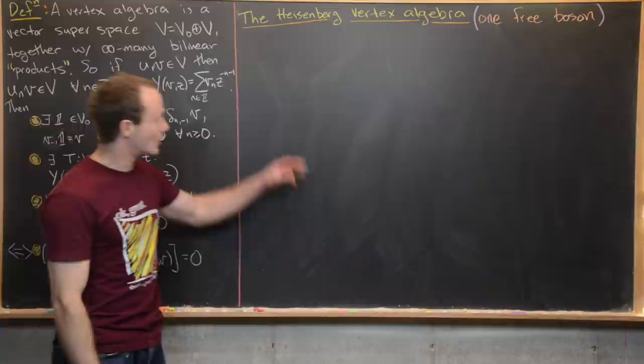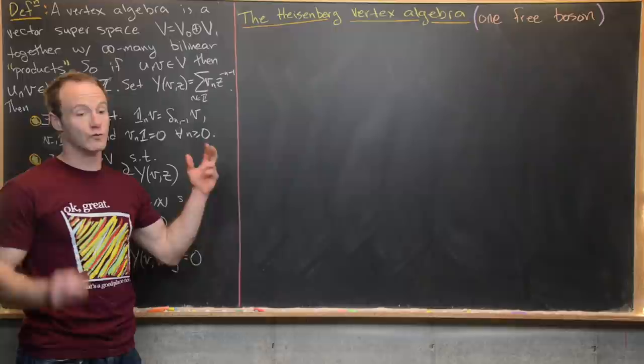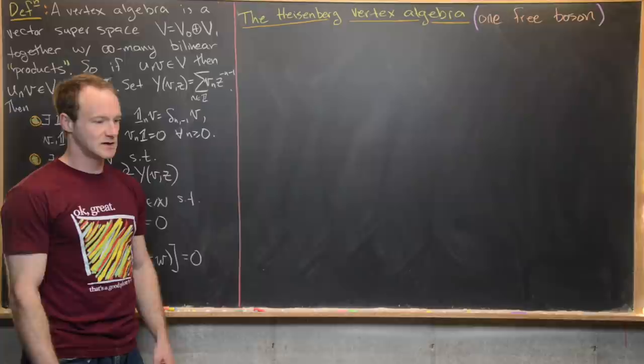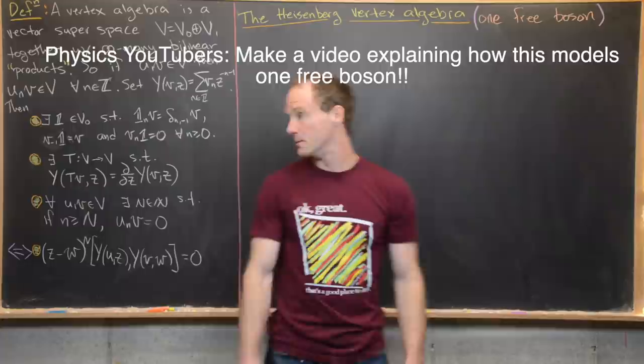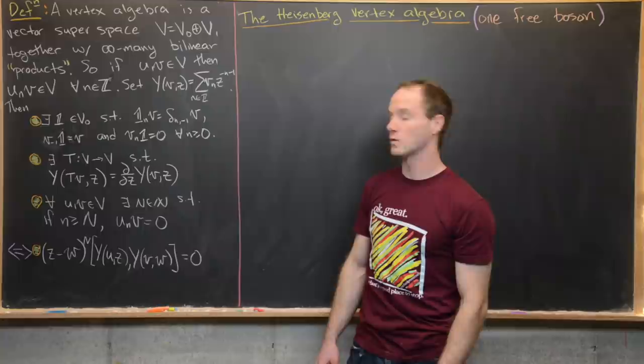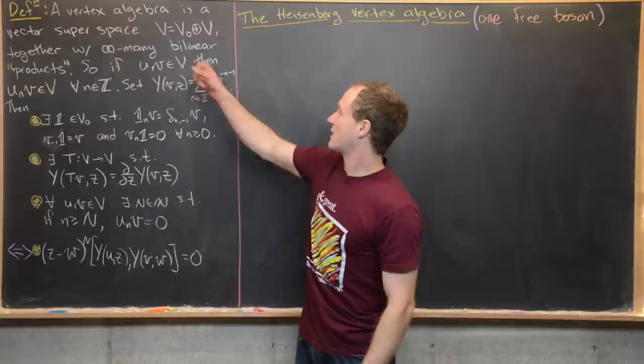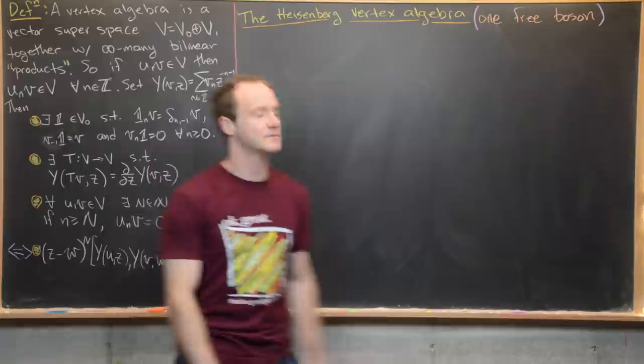In this video we're going to look at something called the Heisenberg vertex algebra — specifically the rank one Heisenberg vertex algebra. From my understanding, this is some sort of algebraic model of one free boson. We need to build the vector space first, which will be quite a bit of work, and then build the infinitely many products or vertex operator, and check all the axioms.